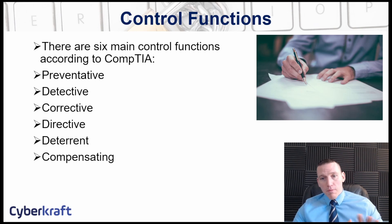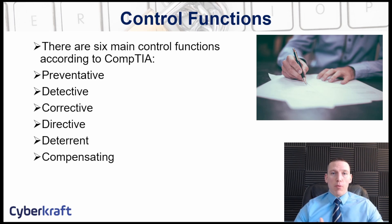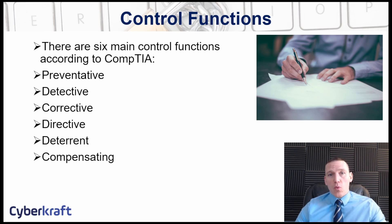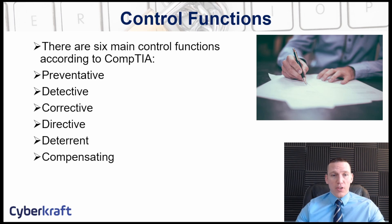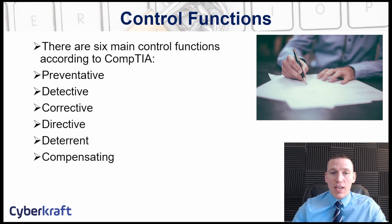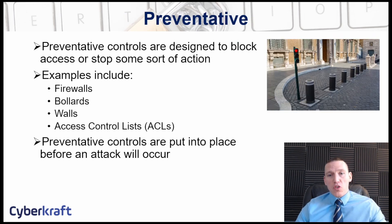We also have six control functions to memorize: preventative, detective, corrective, directive, deterrent, and compensating. These functions occur at different stages of an attack — some before, some after. Preventative controls are put in place well ahead of any attack, in preparation for any sort of breach or threat. Detective controls are also implemented ideally before an attack occurs.